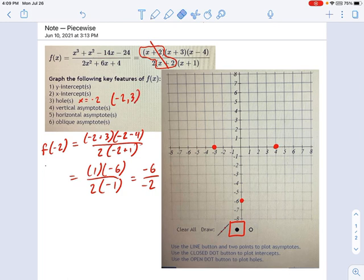And we can plot that using the open circle feature on this graph right here. So what was that again? Negative 2 comma 3. So negative 2, 3. That's going to be right around here.